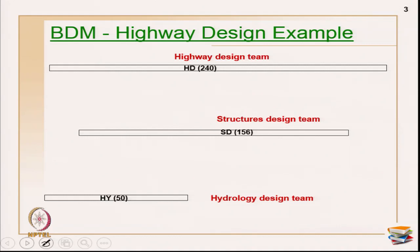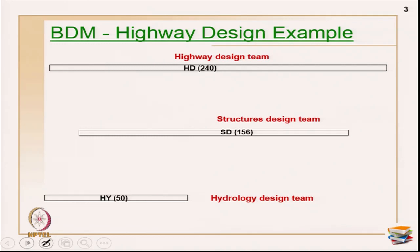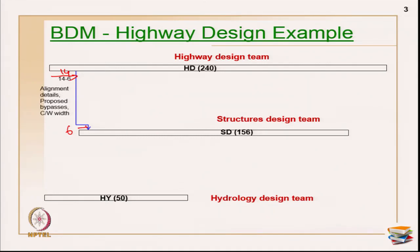I am taking a highway design case. There are three teams here — this is a truncated example just to showcase the relationships that travel across the three teams. The highway design team was on the project for 240 days, the structures design team spent 156 days, and the hydrology design team spent almost 50 days on the whole project. Now, the first link is 14–6, which implies from the predecessor the information release time is 14 and the time at which it is reaching the structures design team is 6. The information that travelled is alignment details, proposed bypasses, and the cross-section width — these are the information which reached the structures design team.